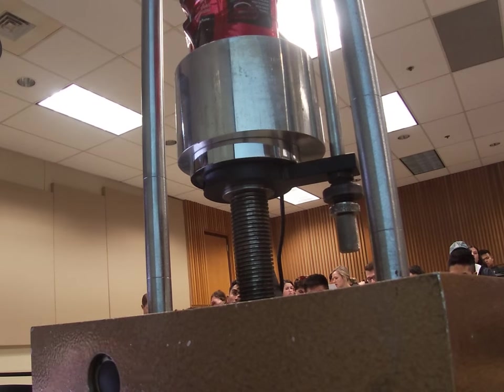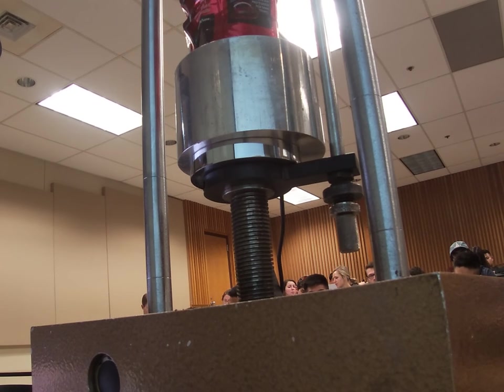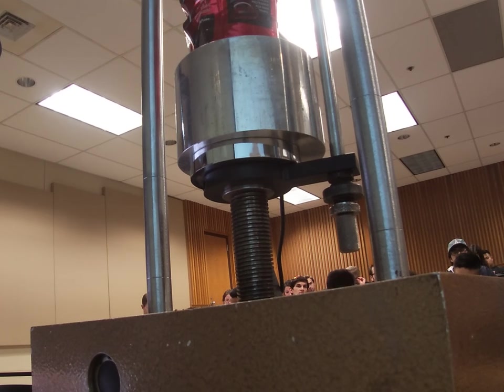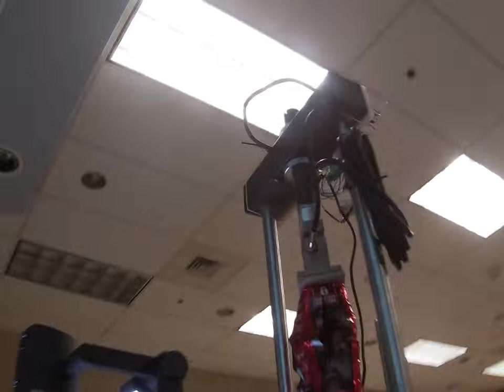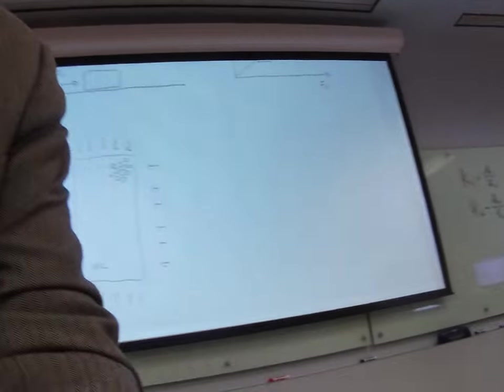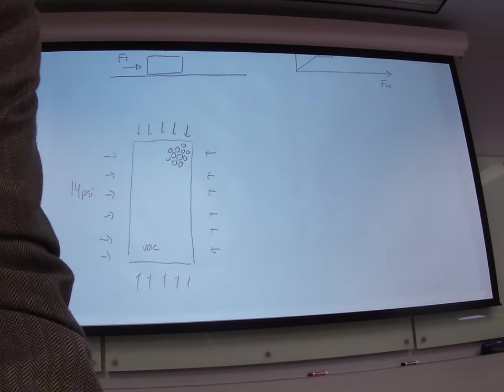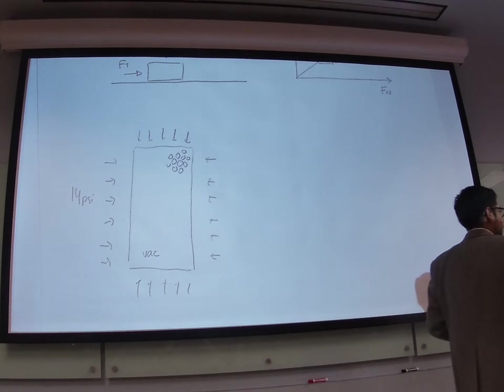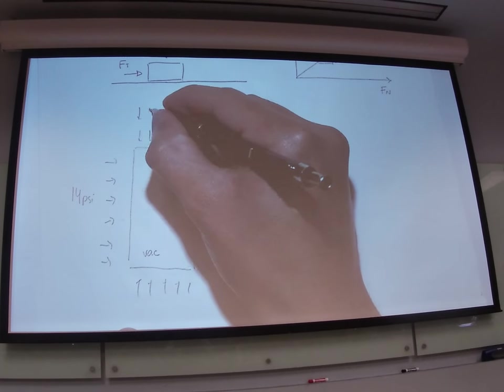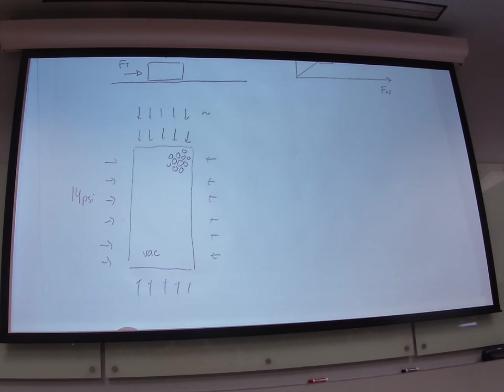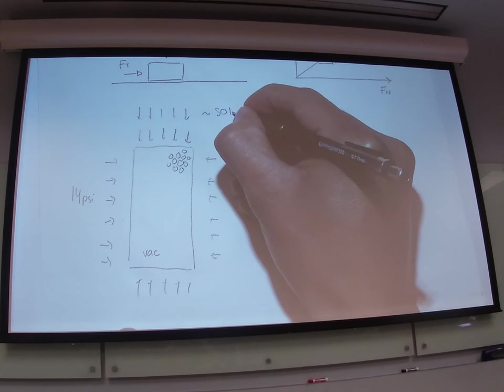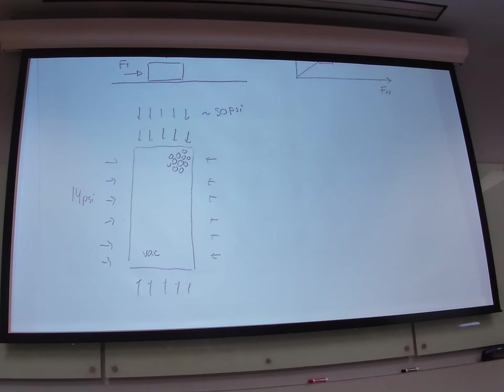All right, so let me tell you what's going on in here. We had a package, right? It had atmospheric pressure. Inside, there was a vacuum. Inside the package, we have grains. And we saw that we were able to put an additional, more or less, we said it was 200 pounds. So 200 pounds divided by 3, that would be 66. We put an additional 50 PSI in addition to what we already had.